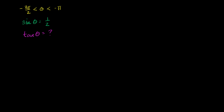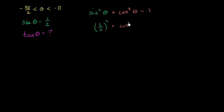So let's do it. We know the Pythagorean identity: sine squared theta plus cosine squared theta is equal to 1. We know what sine squared theta is — sine of theta is 1 half — so this can be rewritten as 1 half squared plus cosine squared theta is equal to 1. That gives us 1 fourth plus cosine squared theta is equal to 1.